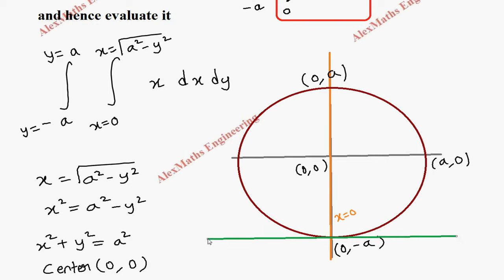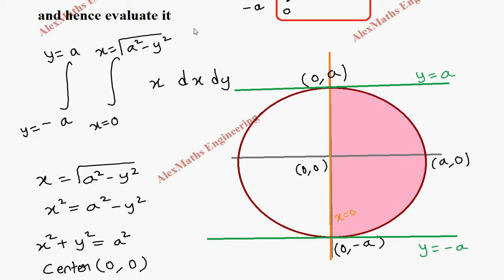The limit of y is from minus a to a, passing through the point a on the y-axis. The equation here is y equals minus a and y equals a. The region under consideration lies between those two lines, from x equals 0 to x equals root of a squared minus y squared. We have completed the diagram.